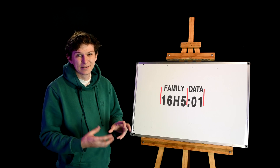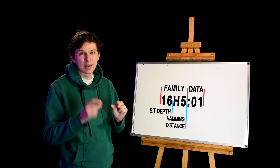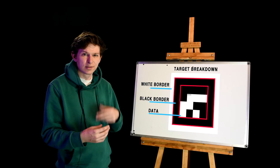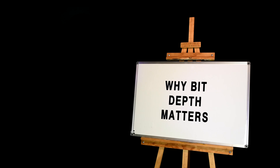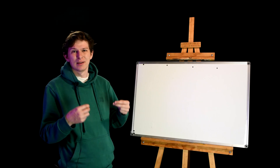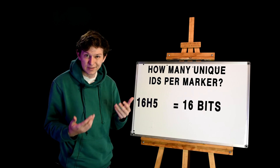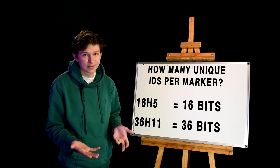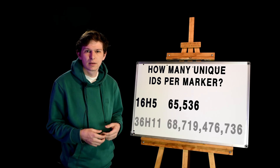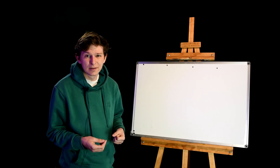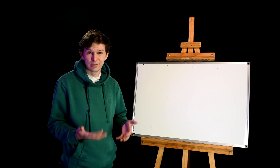Coded targets are defined by the data contained within each one. A family is defined by the bit depth of the target as well as the hamming distance. For April tags, this data is stored as alternating black and white checkers within the overall black square that defines the target's shape. Bit depth defines how much data can be stored within each target. In the case of the 16H5 family, we have 16 bits of data. In the case of the 36H11 family, we have 36 bits of data. 16 bits can contain roughly 65,000 unique IDs; 36 bits can contain 68 billion unique IDs. And that's where the hamming distance comes in.